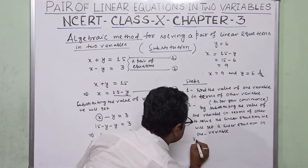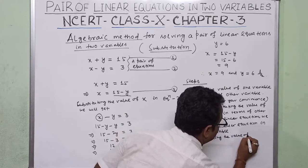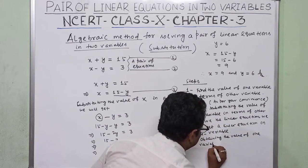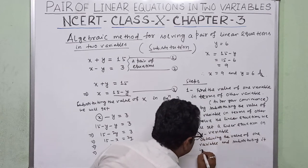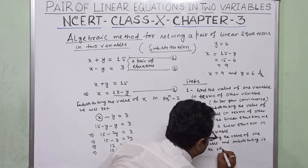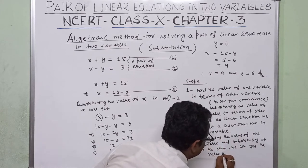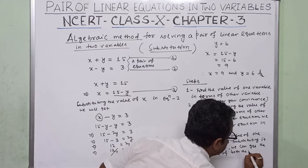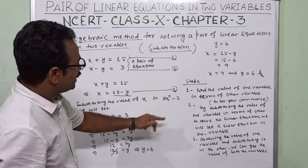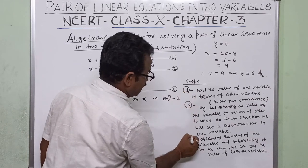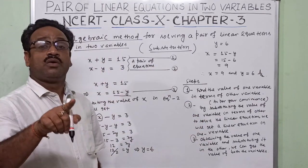Step three: obtain the value of one variable, then substitute it back into the earlier equation to get the value of both variables. So the three steps are: step one — express one variable in terms of the other; step two — substitute and reduce to one variable; step three — put the value back to get the value of the substituted variable.